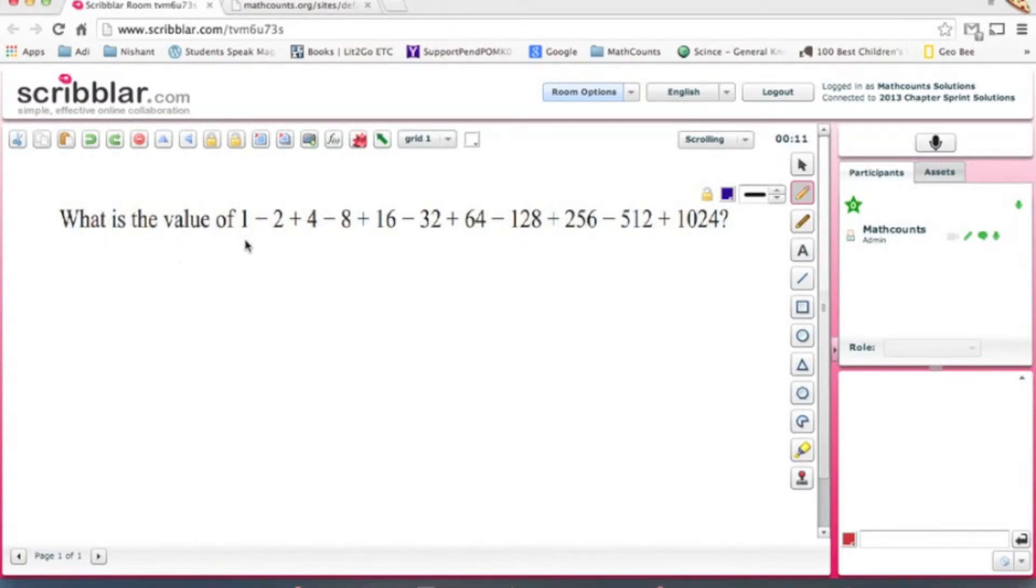I want to do this is we want to group these like so. Here's minus 1, minus 4, minus 16, minus 64, minus 256.